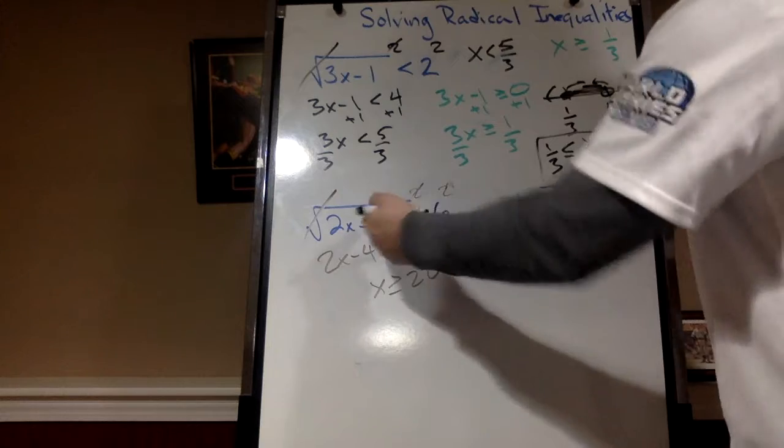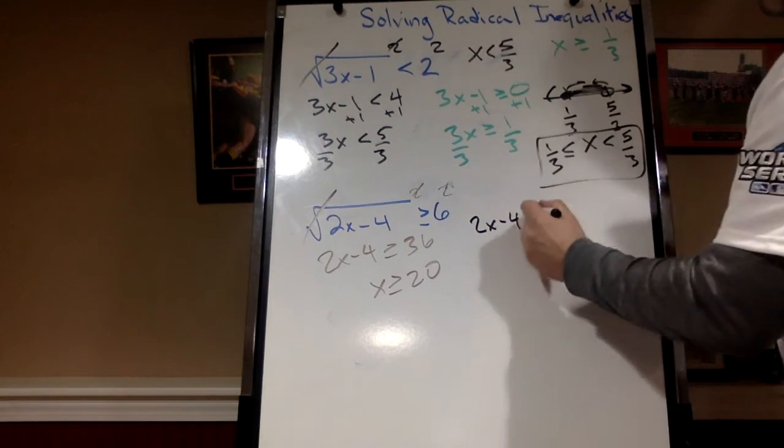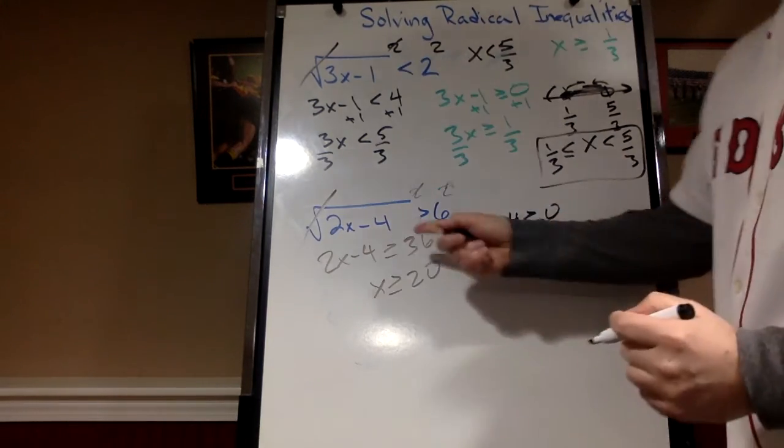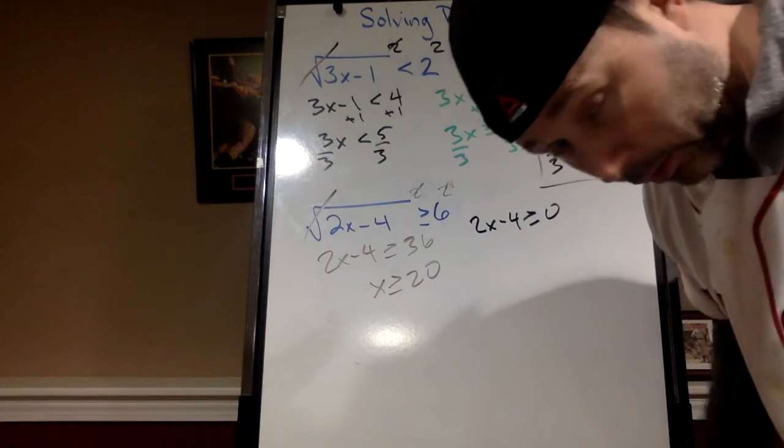Now again, let's take what's inside the radical. 2x minus 4 is greater than or equal to 0. Remember, it can be 0 because the square root of 0 is 0. My hero.